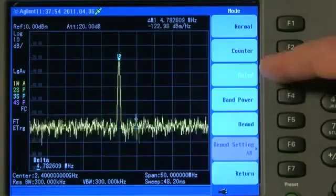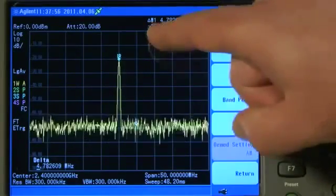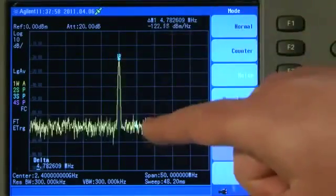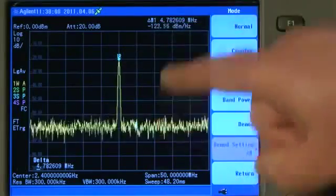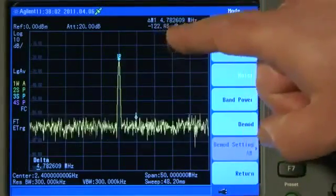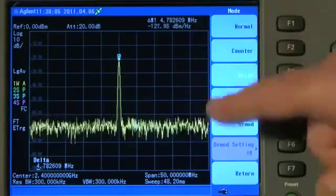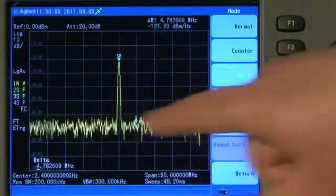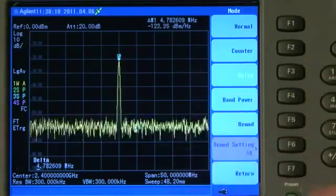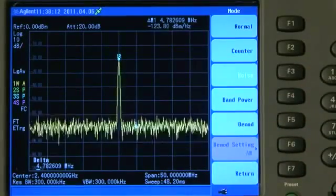Having pressed the Noise Function marker, you can now see that the carrier-to-noise ratio, the difference between the two is about 122 dBm per Hz. In other words, it has normalized the level of this noise floor down to as if we were using a 1 Hz resolution bandwidth filter.